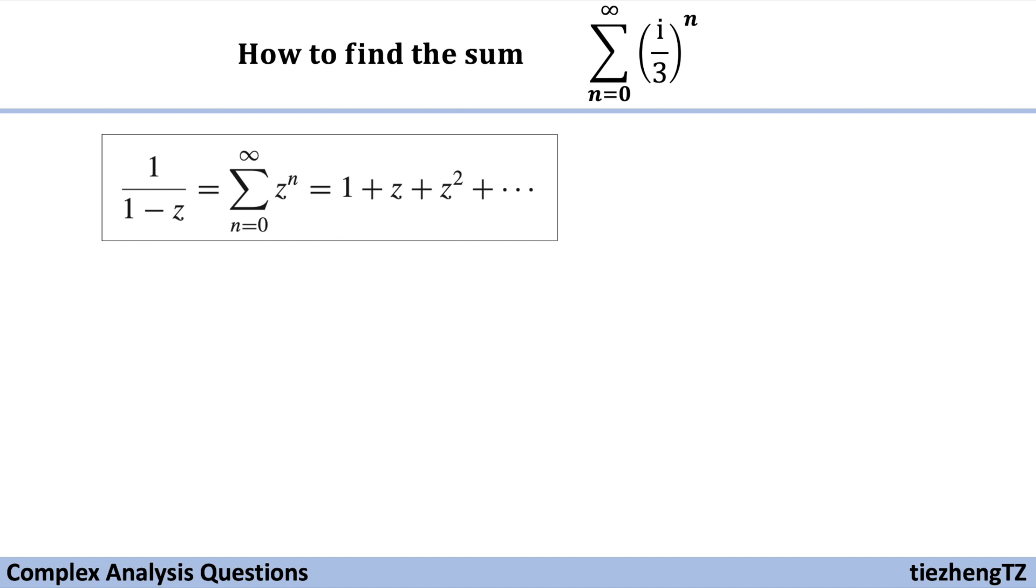And we know in this example, z is i over 3. So the next step and the only step is we just need to substitute i over 3 into this equation.